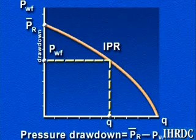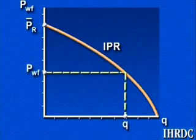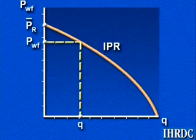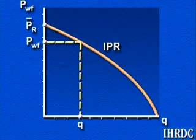For a given average reservoir pressure, then, each bottom hole flowing pressure corresponds to a flow rate. We plot this function on a pressure flow rate graph, like this.